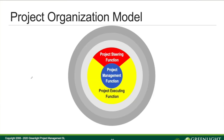The organization model — we symbolize it like this, which could be a stakeholder map. We have the steering function of the project — the governance board, steering group, sponsor, and project portfolio owner. We have the project management function with the project manager, project planner, etc. And we have the project executing function — the people that are really doing the work: designers, testers, construction workers, or whatever we have in our project.